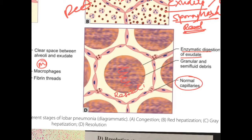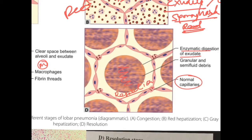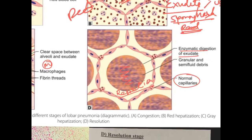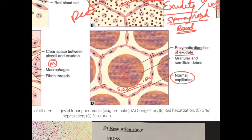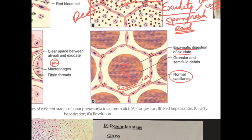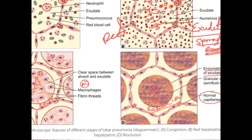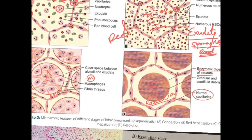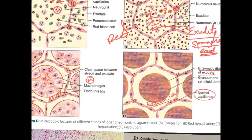These are the normal four stages, but it does not mean there is a thumb rule that pneumonia must follow all three to four phases sequentially. Sometimes with treatment, red hepatization may not even be seen in the patient.